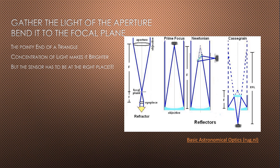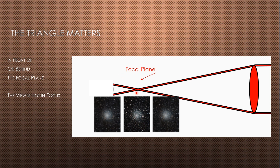Let's first focus on how a telescope focuses. Here is the optical configuration of various types of telescopes. They all start with a wide aperture and then bend the light to a crossing point. That converging light is brighter than it was at the aperture. For a sensor, the critical issue is whether the sensor is in front of, behind, or right on the tip of the triangle. Move the sensor back and forth and you move the image in and out of focus.